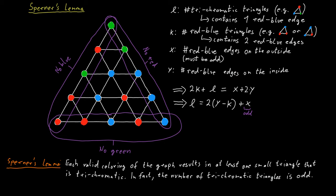And because 2 times y minus k is clearly even, no matter what y and k are, we conclude that l must be odd, as claimed.